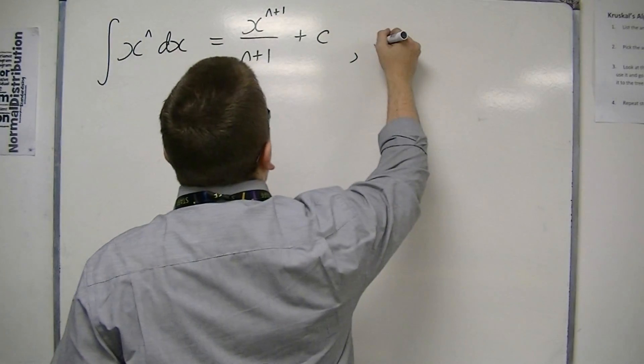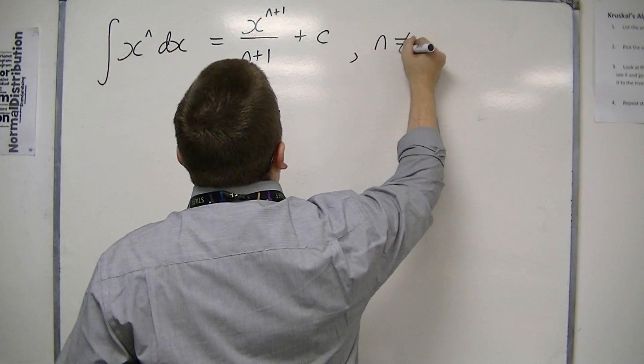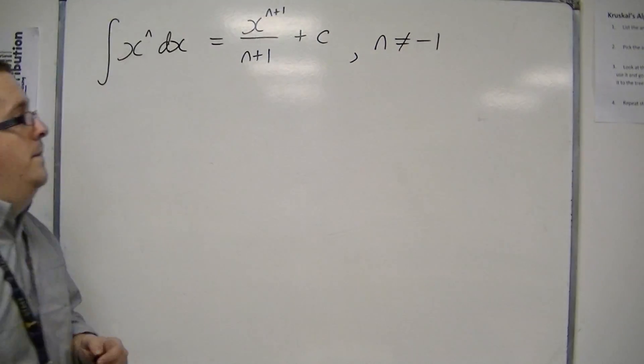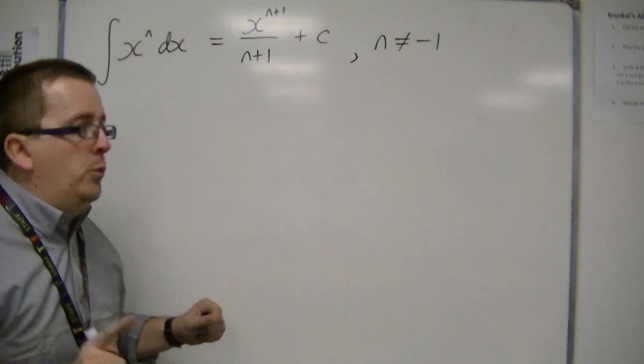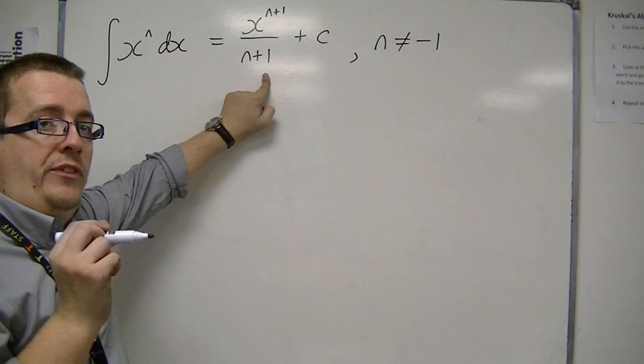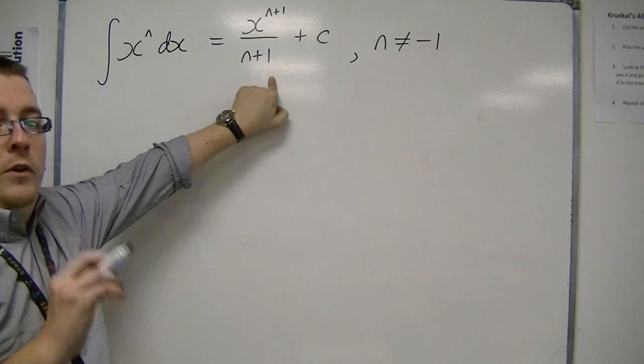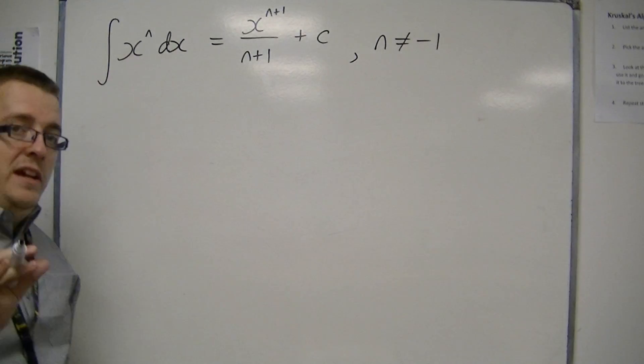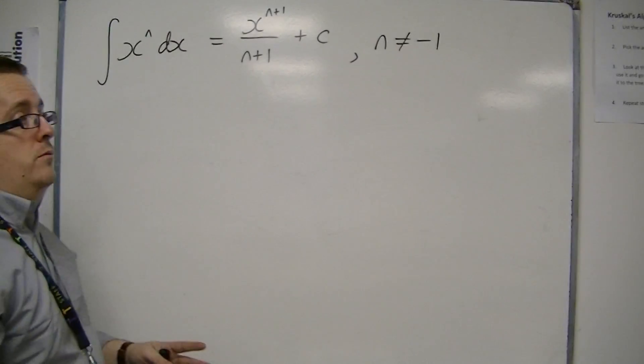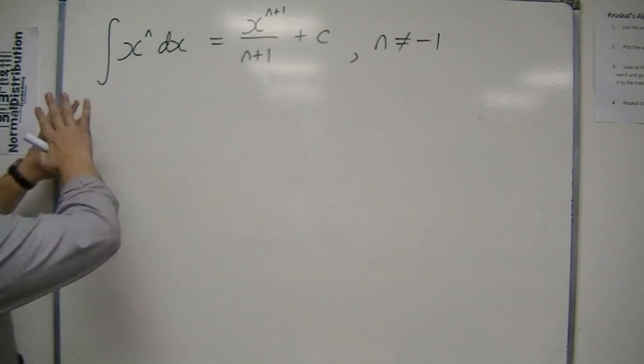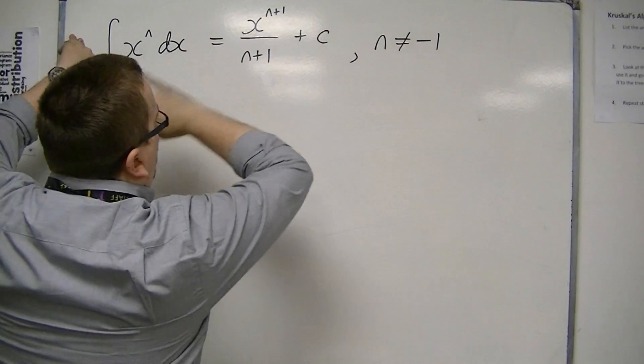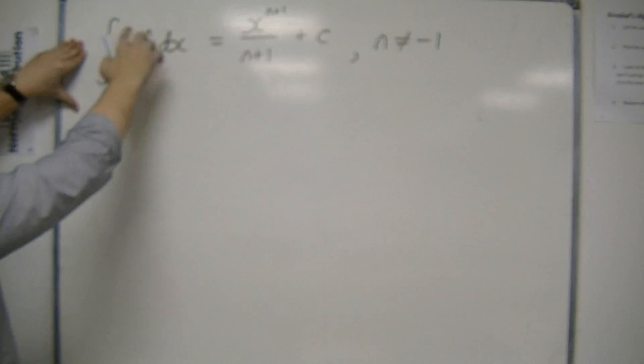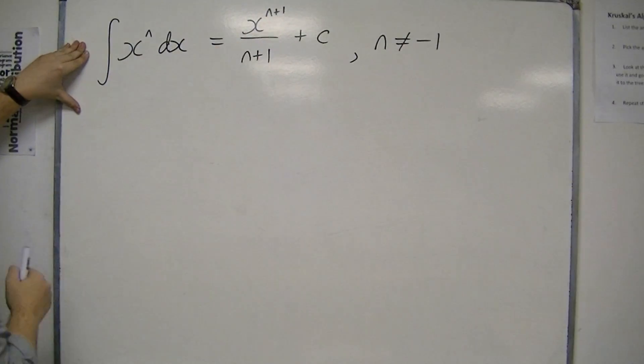This is exactly the same as before. The only proviso is that n is not equal to minus 1. Because when n equals minus 1, you get a fraction with 0 as the denominator, which doesn't work. We'll deal with that when we get to Core 3 using logarithms. This works for whatever power of n, as long as n is not minus 1.